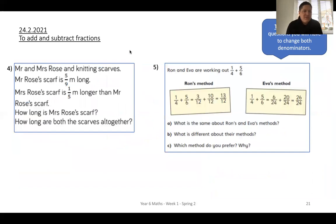Moving on, we've got some more problems. Mr. and Mrs. Rose are knitting scarves. Mr. Rose's scarf is five ninths of a metre long. Five ninths of a metre. Mrs. Rose's scarf is one-fifth of a metre long. Oh, wrong. Read it properly, Mr. Hampson. Mrs. Rose's scarf is one-fifth of a metre longer than Mr. Rose. So, how long is Mrs. Rose's scarf? Well, I know there then. Mr. Rose is his five ninths. Mrs. Rose is an extra one-fifth. So, I need to add those together. But I've got ninths and fifths. Can't add them. Find the common denominator. How do you find the common denominator? You find your lowest common multiple. How long are both scarves all together? Well, once you've found Mrs. Rose's scarf and you've found Mr. and you know Mr. Rose's scarf, you can just add them all together.